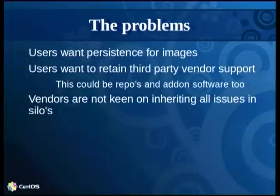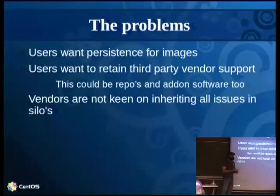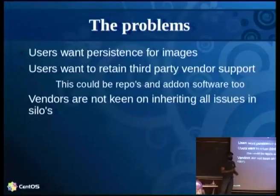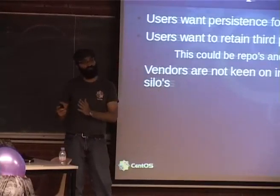The problem boils down to: users want persistence for images. They want something reliable that looks like CentOS, irrespective of where they are or what vendors they're working with. But they still want to retain third-party support — they still want to call PairOne for help. Which means we need a consistent platform from the vendors to CentOS and from CentOS through those vendors to the users.